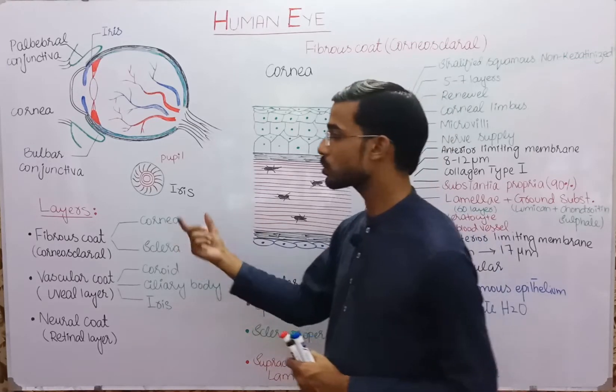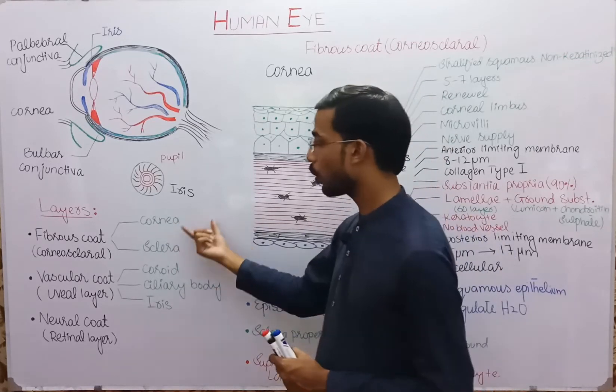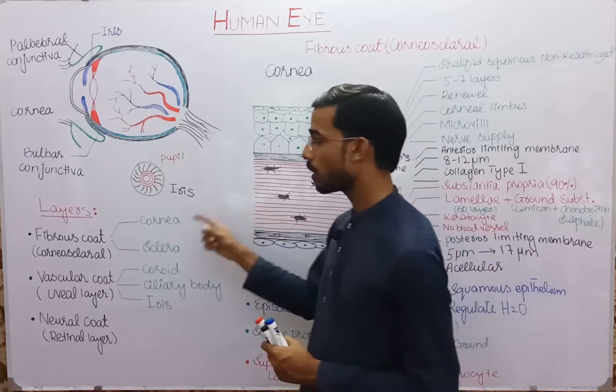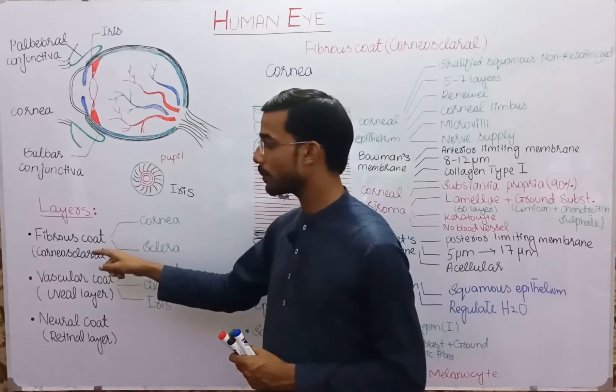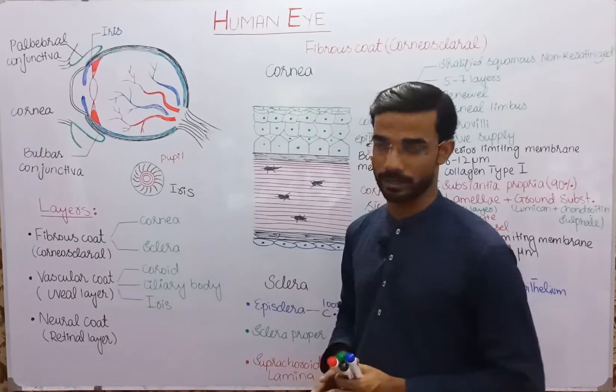The fibrous cord has two components, and its another name is the corneoscleral layer.